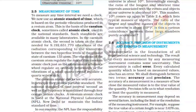Such standards are available in many laboratories. In the cesium atomic clock, the second is taken as the time needed for 9,192,631,770 vibrations of radiation corresponding to the transition between the two hyperfine levels of the ground state of a cesium-133 atom. The vibrations of the cesium atom regulate the rate of the cesium atomic clock.